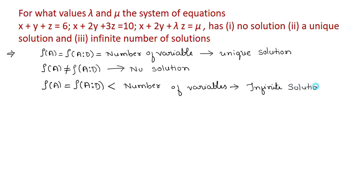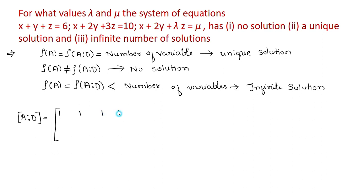With respect to this, we will solve the system of equations. For the given matrix, matrix A stands for the coefficient matrix and D is the column matrix of the constants. For the first equation, the coefficients are 1, 1, 1 and the element of D is 6. The second row is 1, 2, 3, 10. For the third equation, it is 1, 2, lambda, mu.